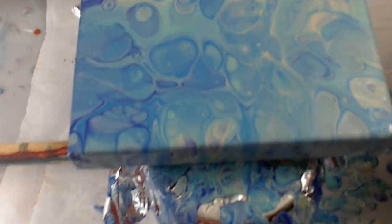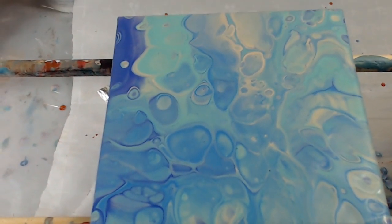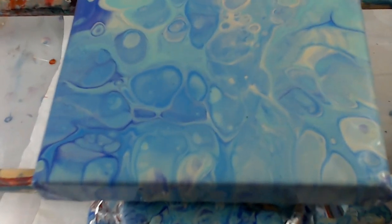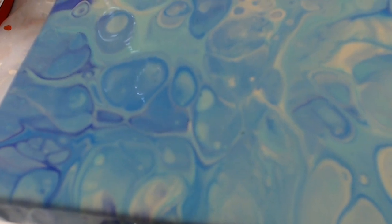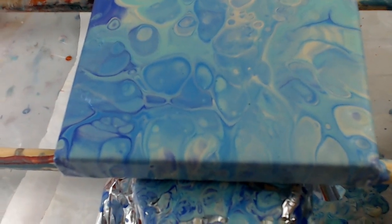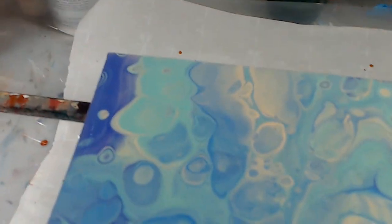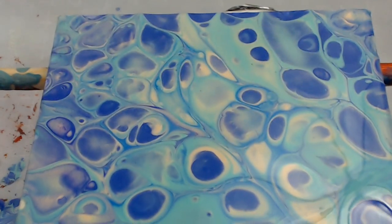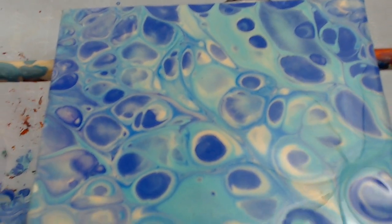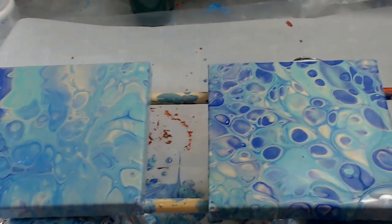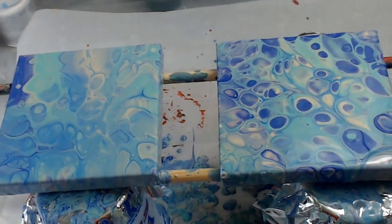Alright, this is the Martha Stewart marbling medium. There are still cells, but it's very pastel except for that corner where it's purple up there. This is the Liquitex pouring medium. And there you can kind of see them both together so you know what I'm talking about.